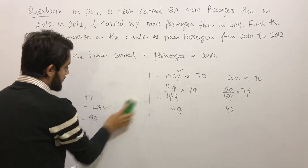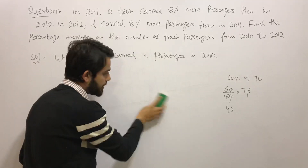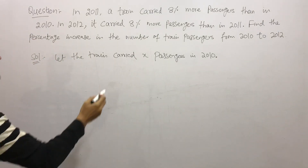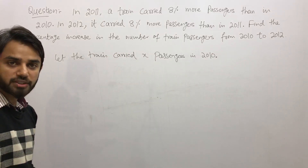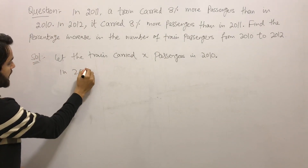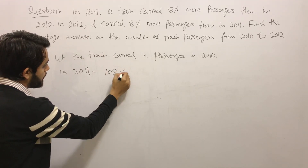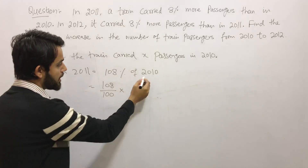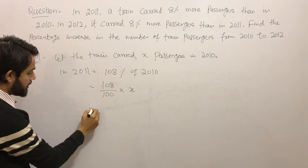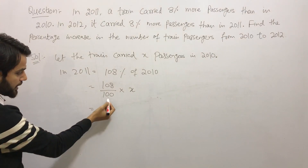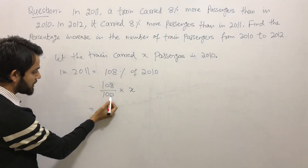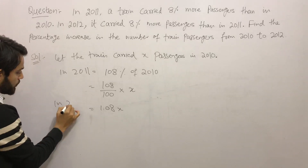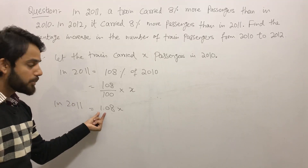Now I assume you have a better understanding of how to increase or decrease a number using Method 2. The train carries X passengers in 2010. In 2011, it carried 8% more passengers, which means 100 + 8 = 108% of 2010. So passengers in 2011 = 108/100 × X = 1.08X. The train is carrying 1.08X passengers in 2011.